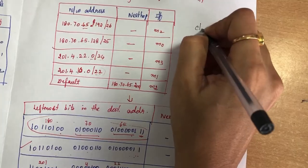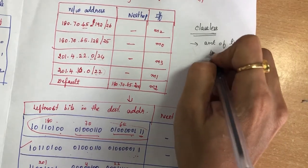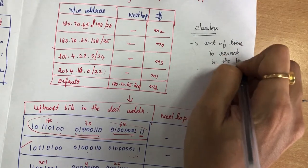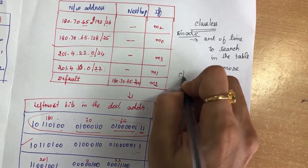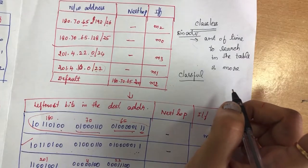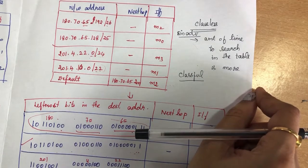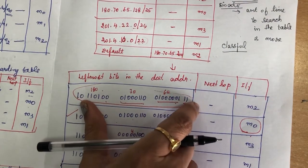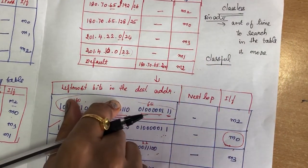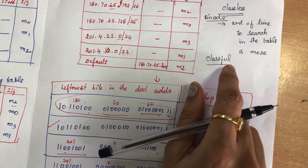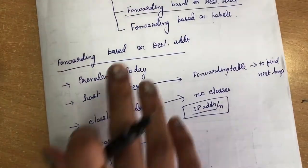In classless addressing, the amount of time required to search in the table is more, because we match using subnet masks and destination addresses. In classful addressing, it is simpler — there is only one entry type, and matching is straightforward. The time required for forwarding in classful addressing is less compared to classless addressing. This covers forwarding based on destination address.